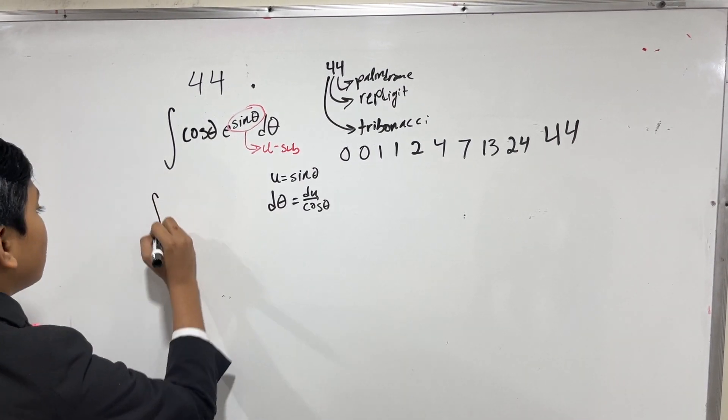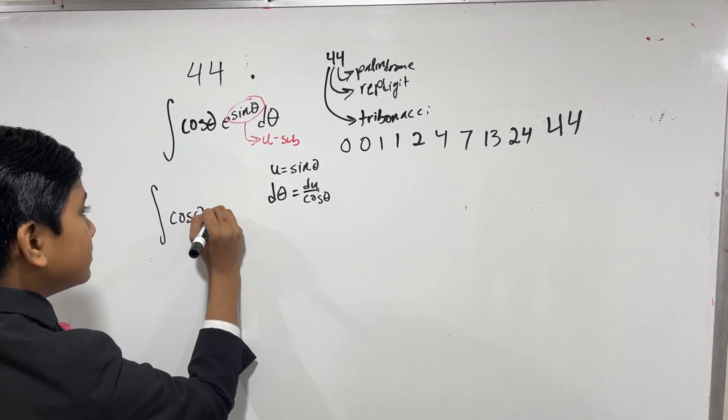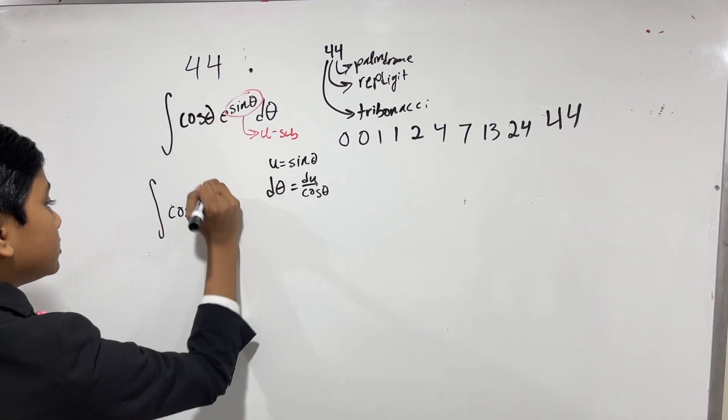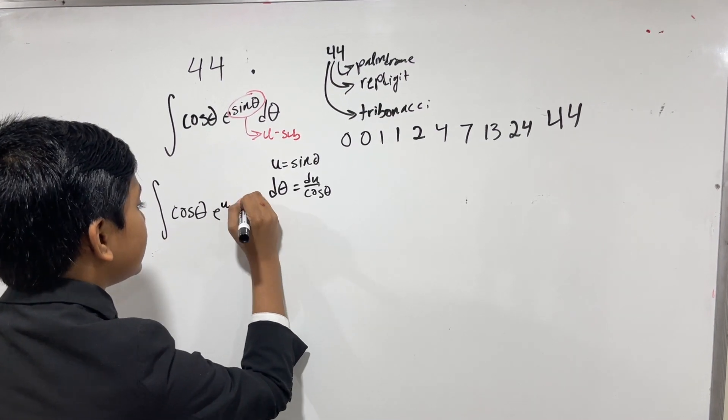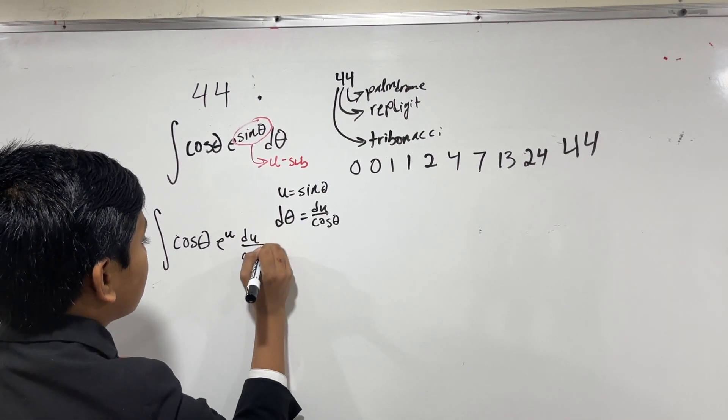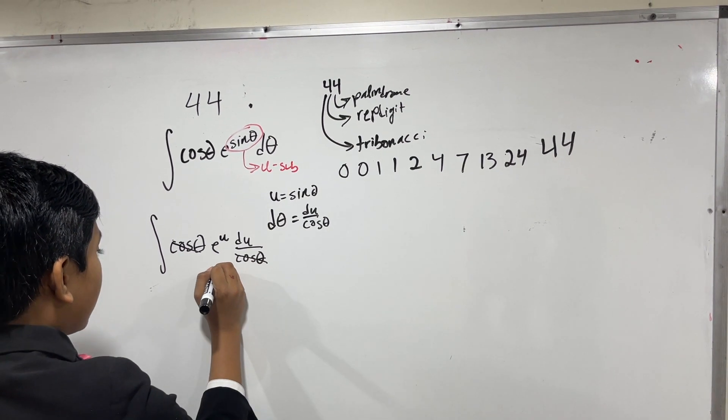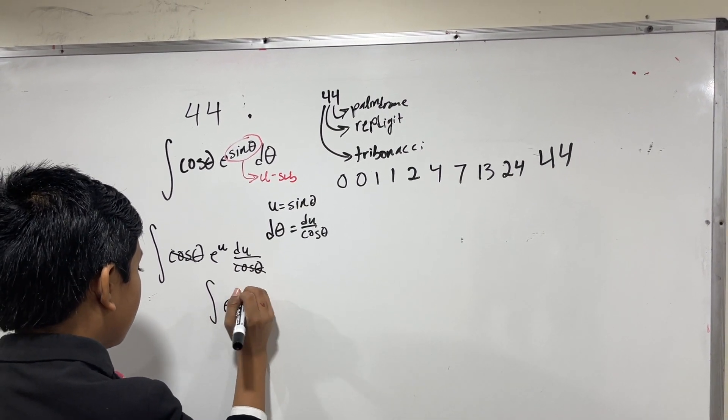So now, we have cosine theta times e, u is sine theta, so we can write this as e to the u, and then d theta is du over cos theta. So now, we simply get e to the u du.